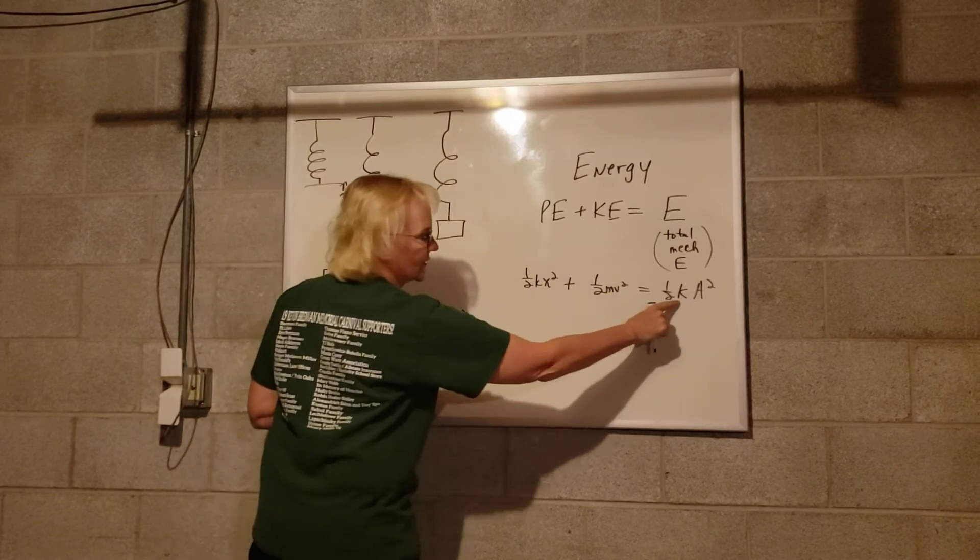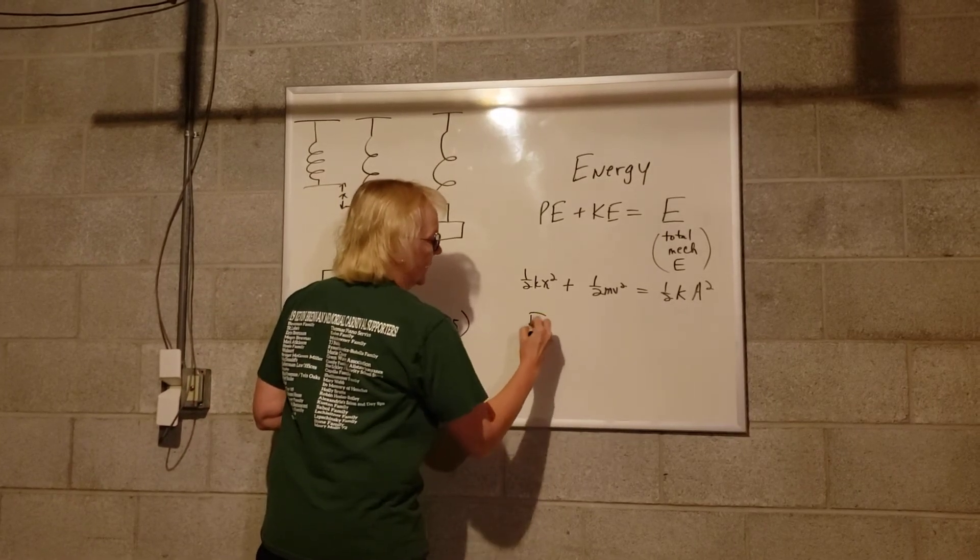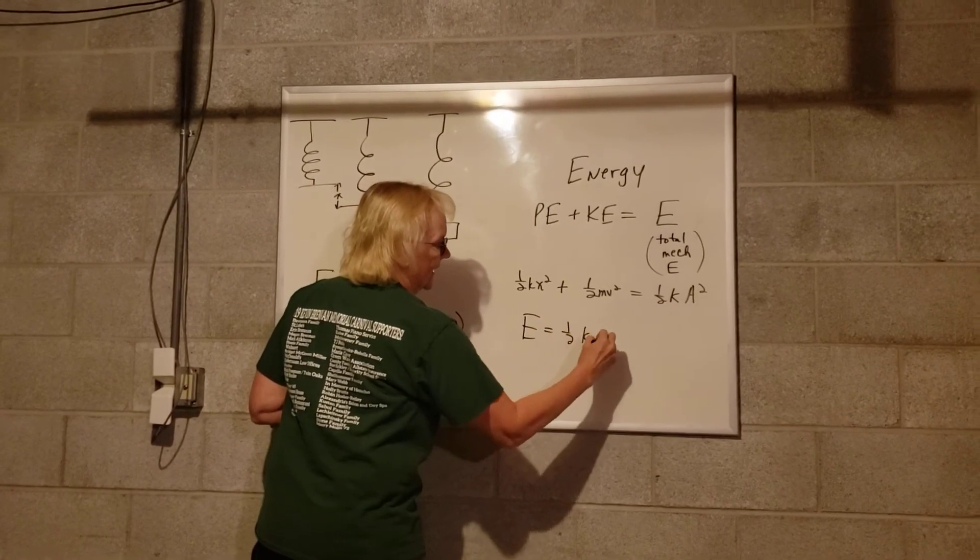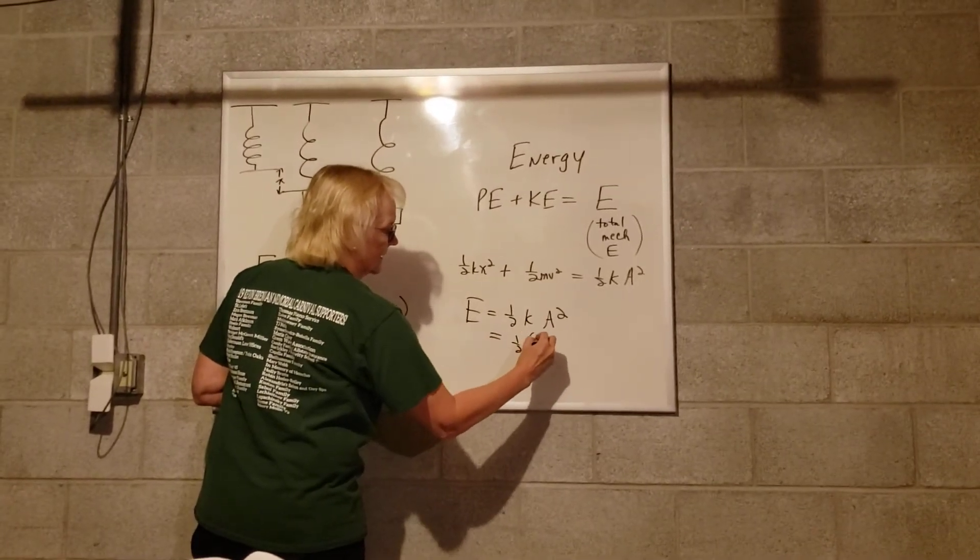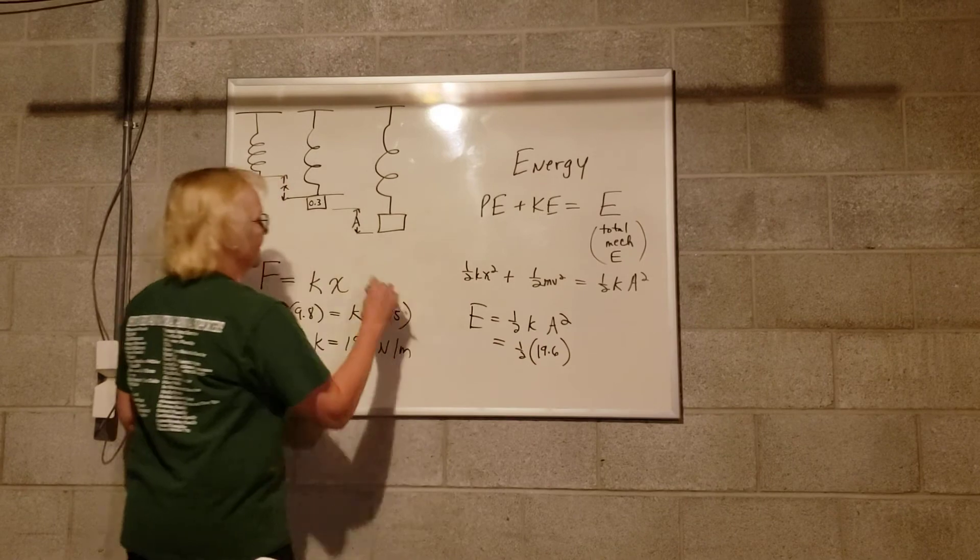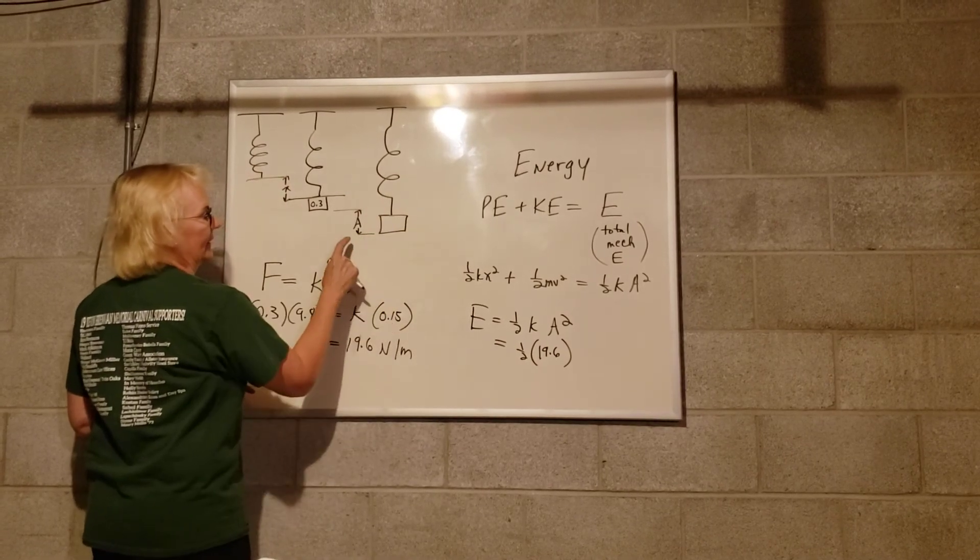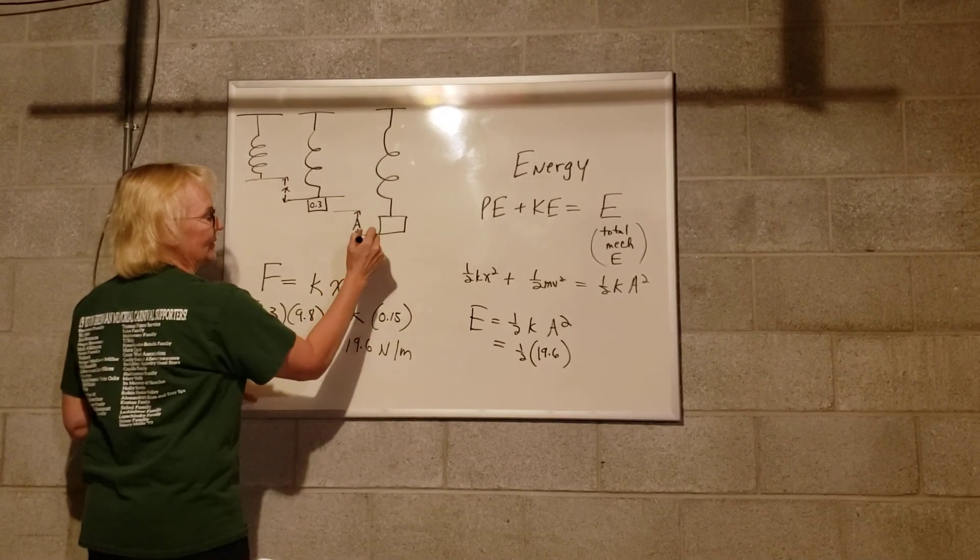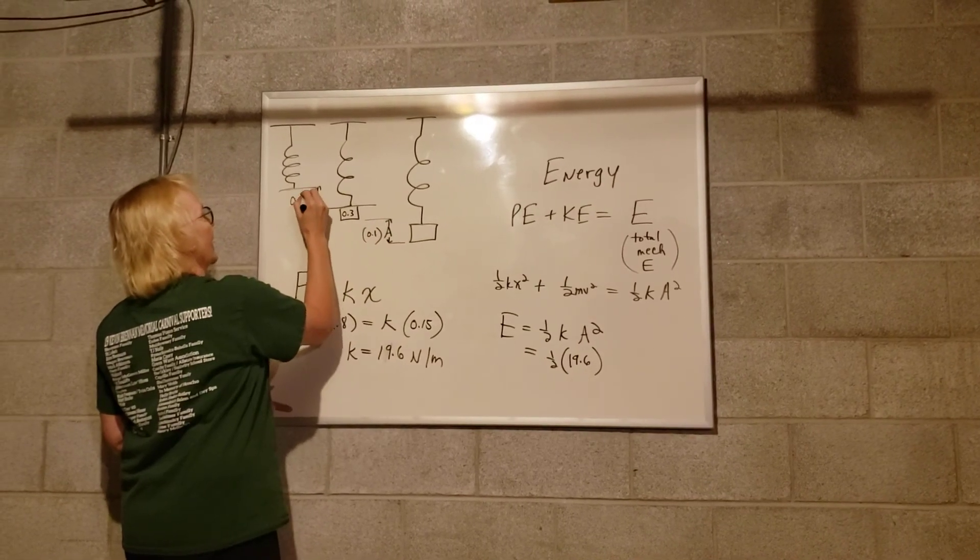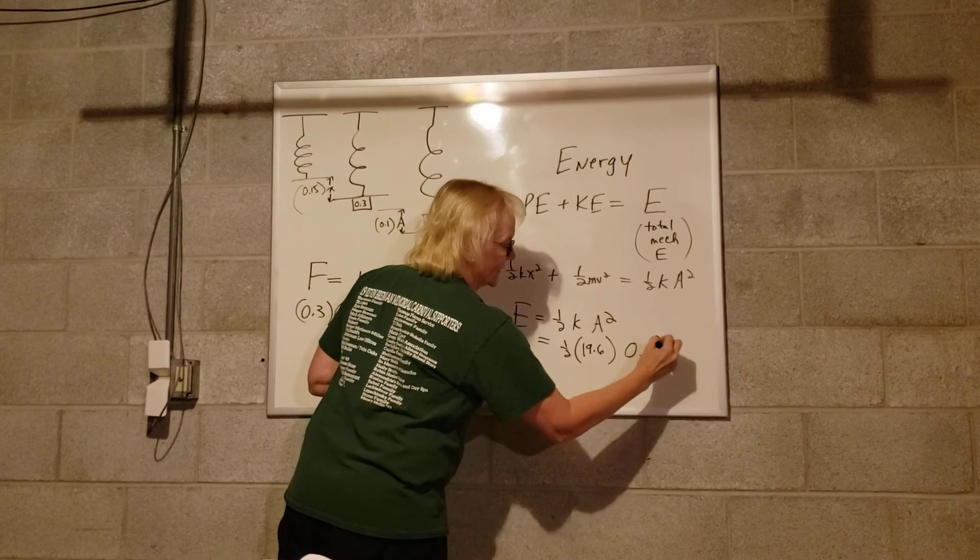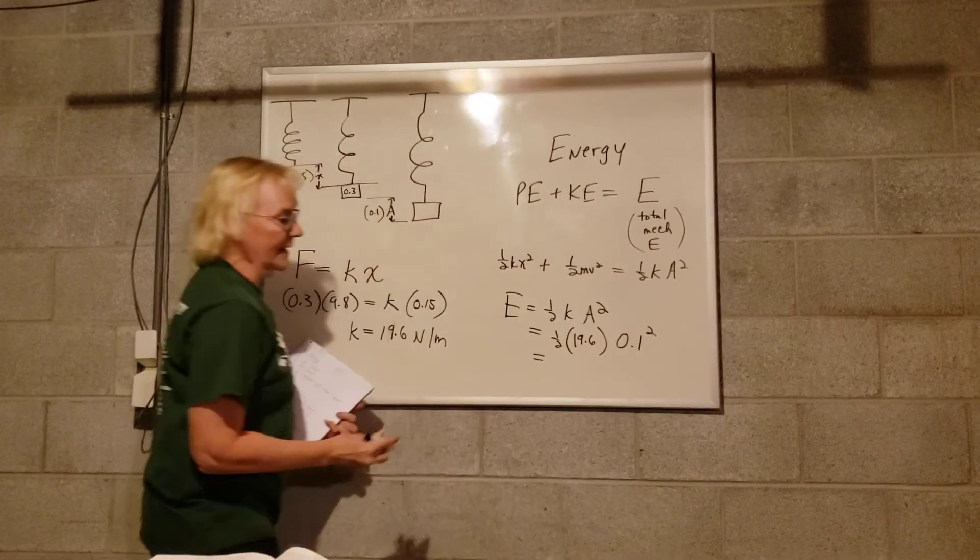Total energy equals one-half K A squared. Now that we know K is 19.6, amplitude—remember that's when we pull it down—and they told us that this was 0.1, this one was 0.15. So we take 0.1 and we square it, multiply it by a half of 19.6.